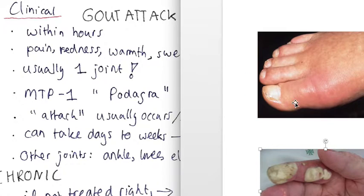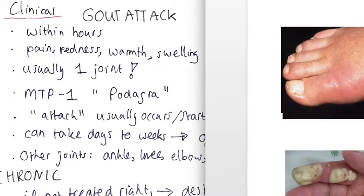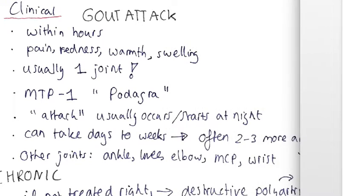Typically for gout is that it's usually one joint, and also typically for gout is that it's this joint over here. So it's usually the MTP, the metatarsophalangeal joint number one of the foot. So that's really typical, think about gout when you see this, and it's called a podagra.